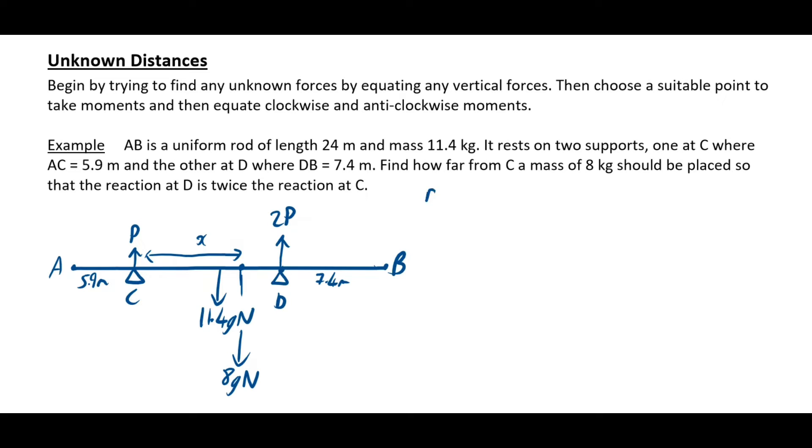We will resolve vertically first of all. So the force up is 3P, and the force down is going to be 11.4g plus the 8, so it's going to be 19.4g, which means P works out to be 194 divided by 3. We could work this out at this stage, but there's not really any need. If you work it out, it is 64 and two-thirds, but I would just leave it as this. That's fine. So that's where we found our P.